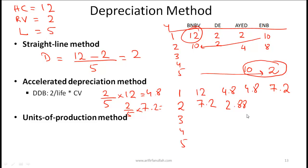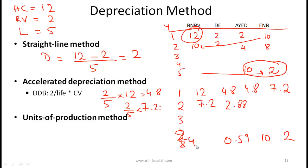If you work through the numbers, you'll find that in year four the only remaining amount to depreciate is 0.59, which brings accumulated depreciation to 10 and ending book value to 2 — the residual value. So make sure you can work through this table yourself.